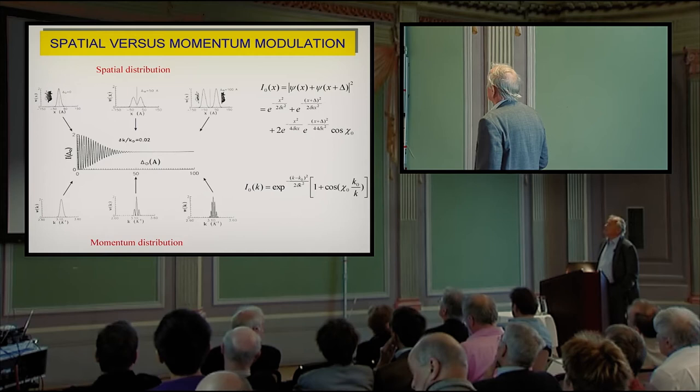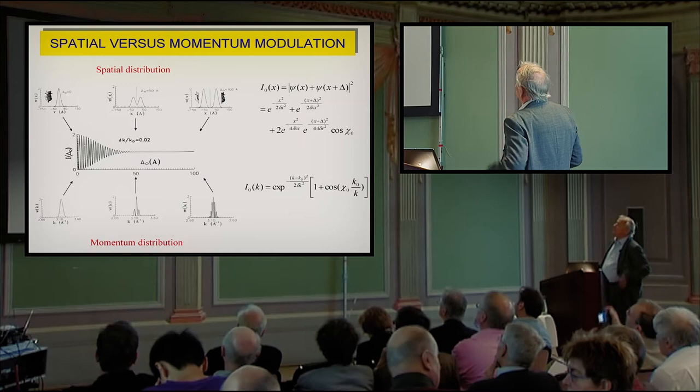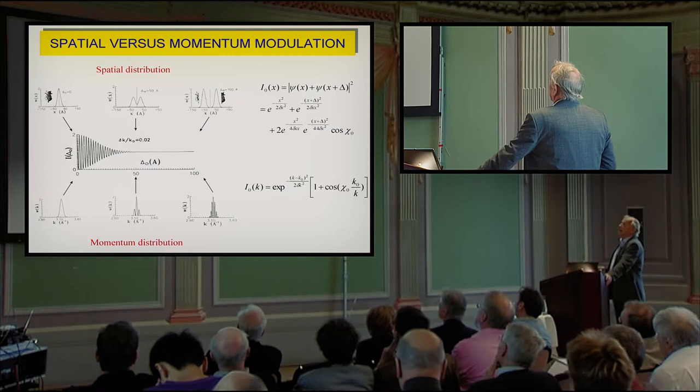You can now have this situation. Usually one starts with a Gaussian packet, and then when you have a phase shifter, the packets become separated, completely separated, and you produce kind of Schrödinger cat states.